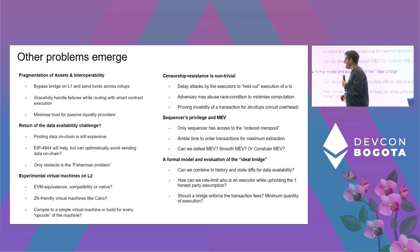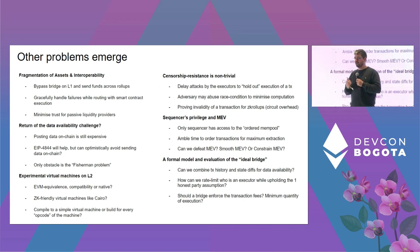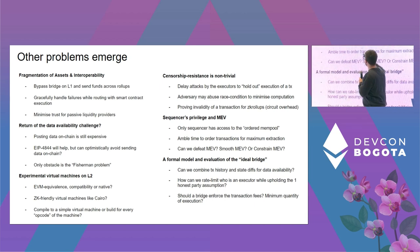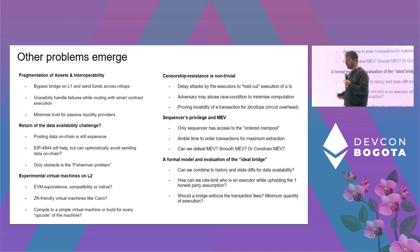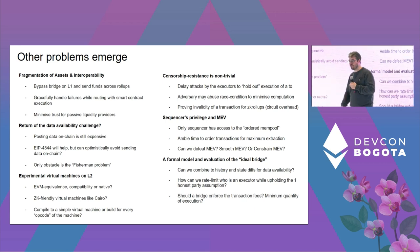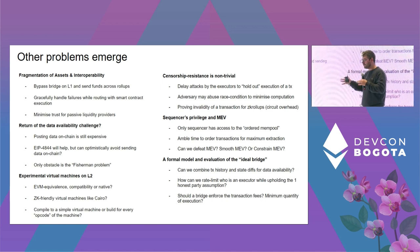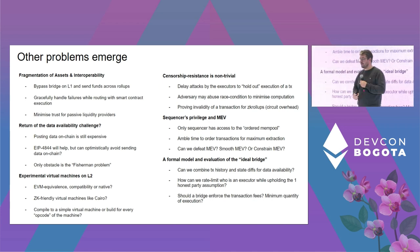There are also many other problems beyond these three. Censorship resistance has a lot of non-trivial details. What I'm excited about are experimental virtual machines — the original goal of the sidechain paper. Now we have Cairo for StarkNet, the Arbitrum virtual machine, Optimism Bedrock, and Fuel with the Sway language — all cool custom virtual machines and languages, while still retaining the security of Ethereum.